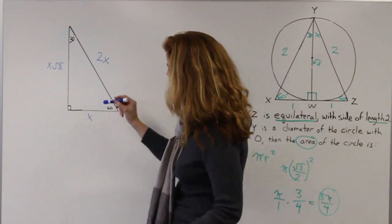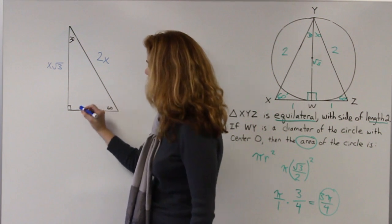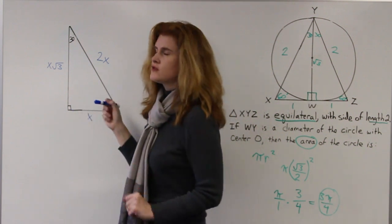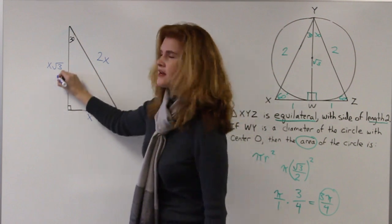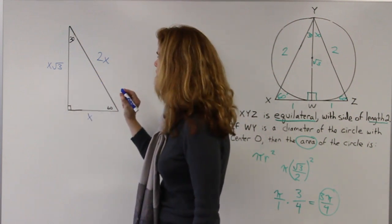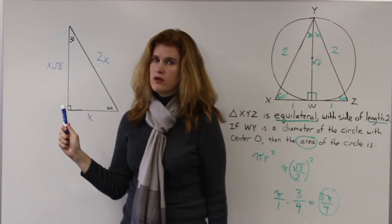Remember that the side that's opposite the 30 degrees is always your x. The side that's opposite the 90 degrees, or the hypotenuse, is always your 2x. And the side that's opposite the 60 degrees is always your x root 3. Really take time to get this down and memorize it, because this definitely will come up on the test.